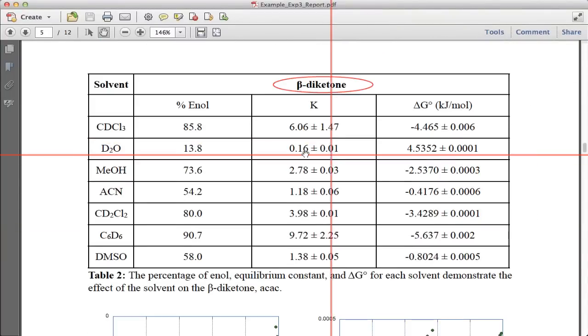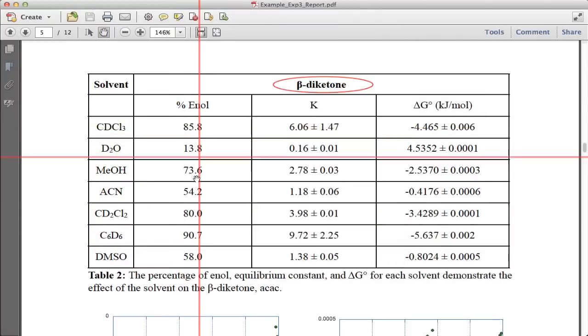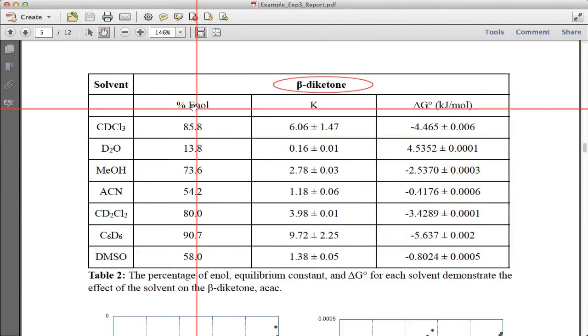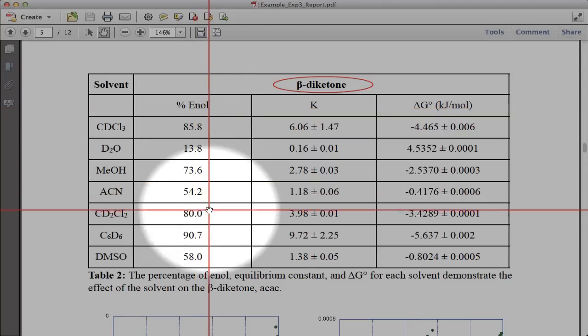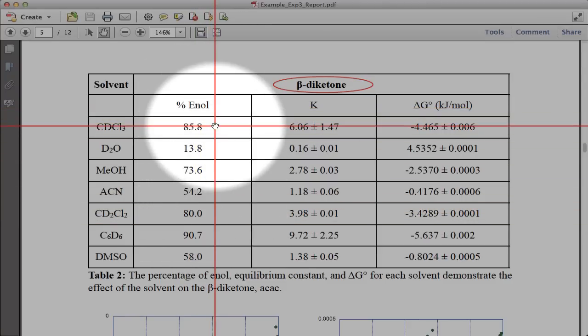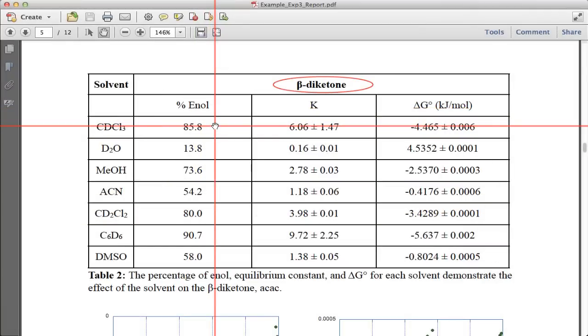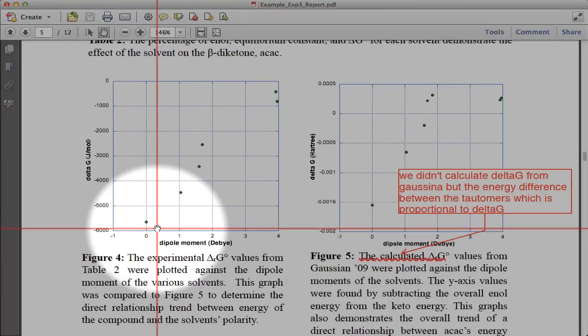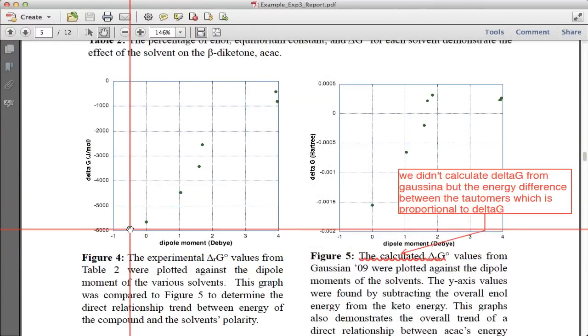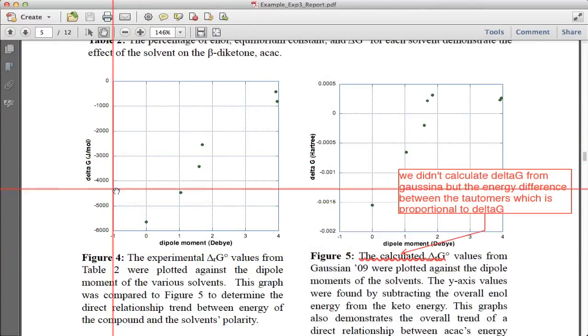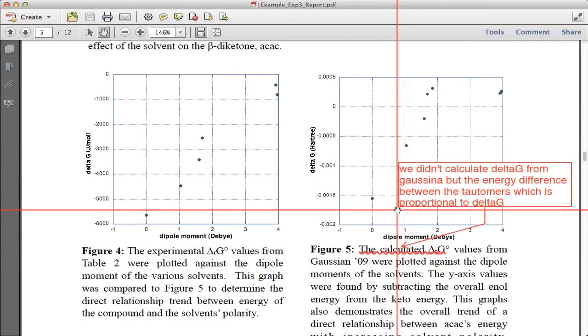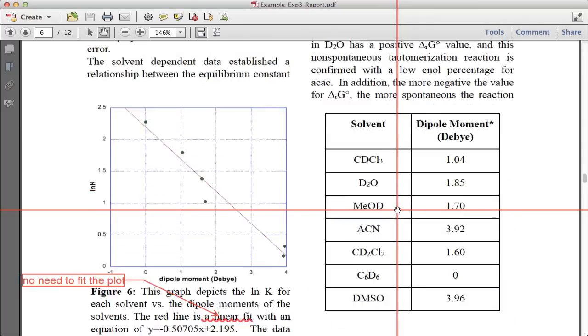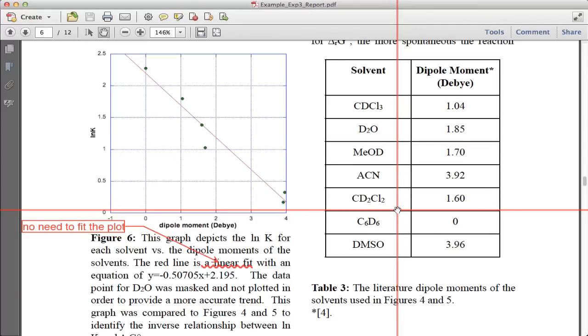Then they do that for a bunch of different solvents and they can get the percent enol, ketone, etc. Obviously the percent ketone is just 100 minus the percent of enol. Then they can look at the dipole moment which you can look at for each of the solvents or calculate for each of the solvents. Look at what they measure directly in NMR versus what you get calculated and then discuss and compare some of those ratios.